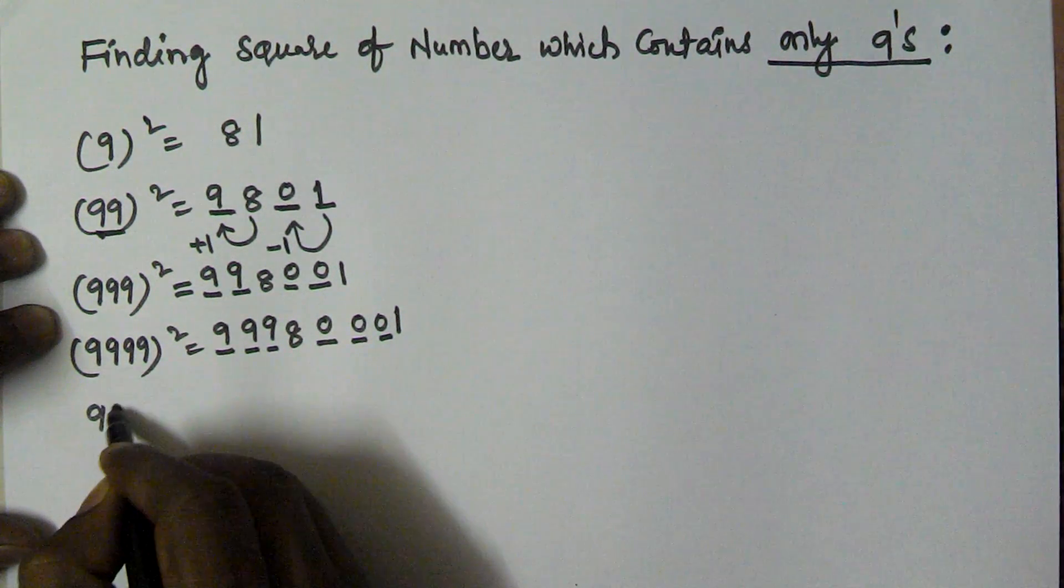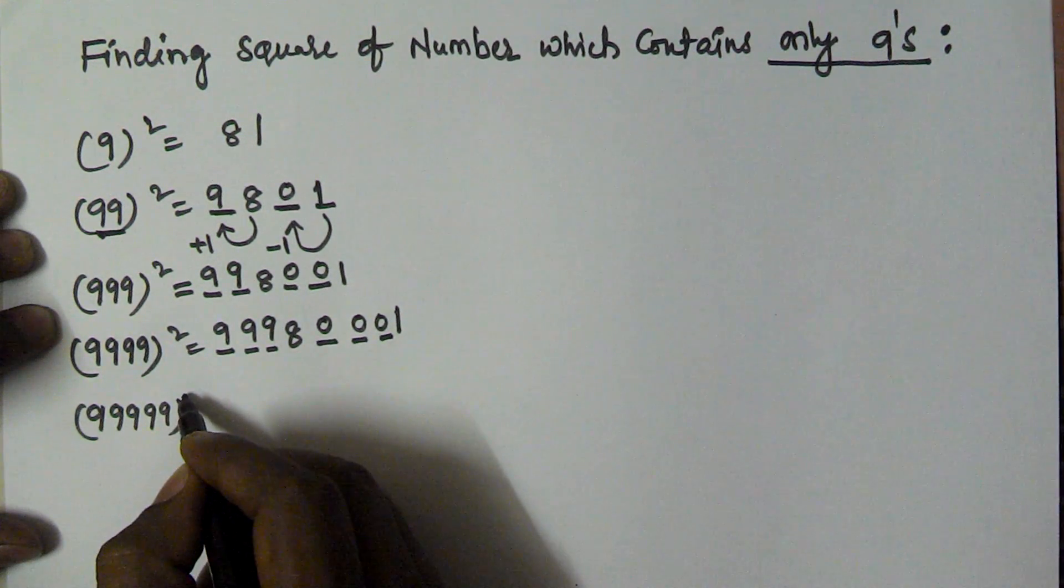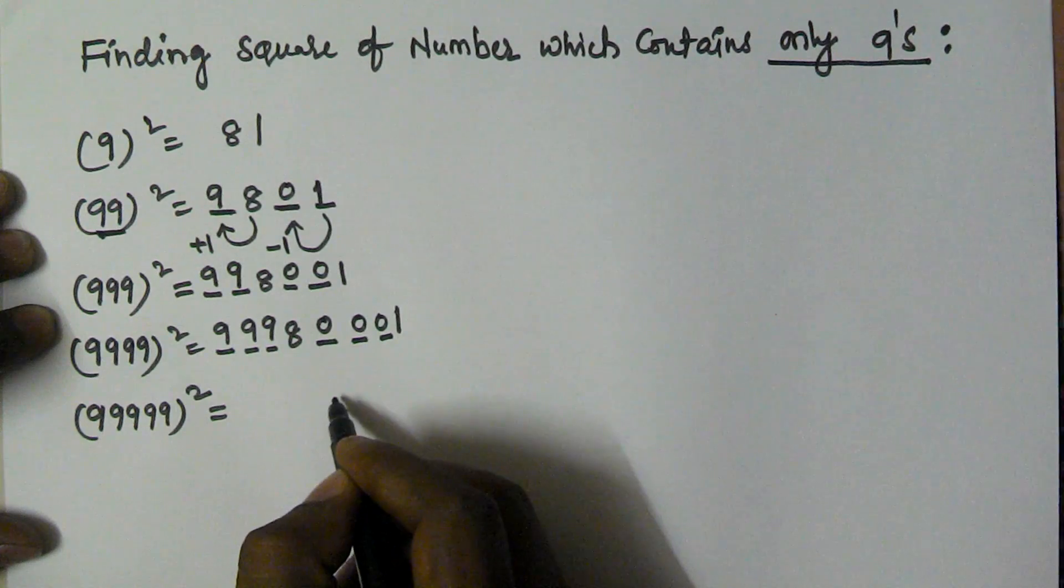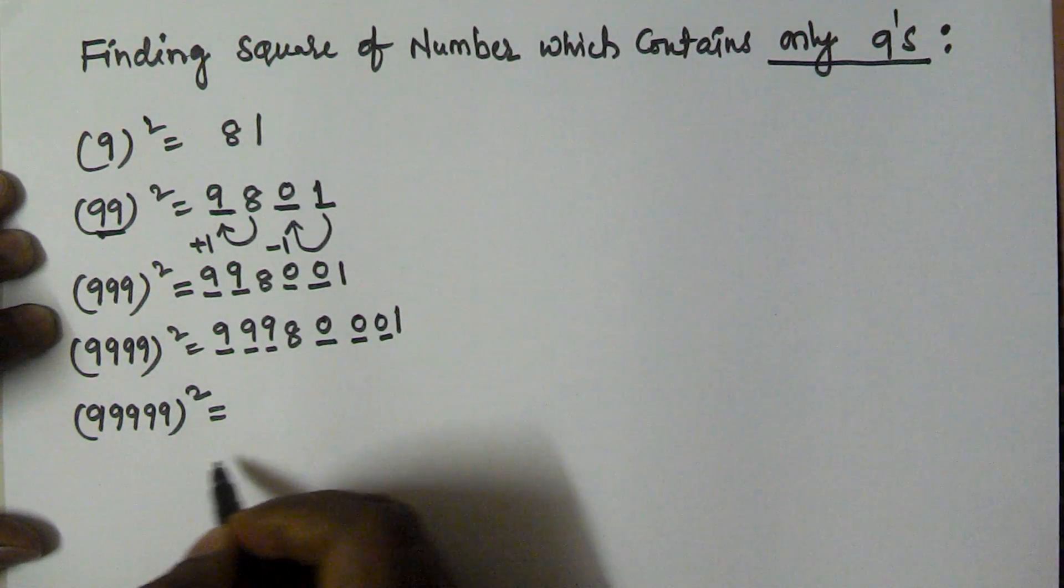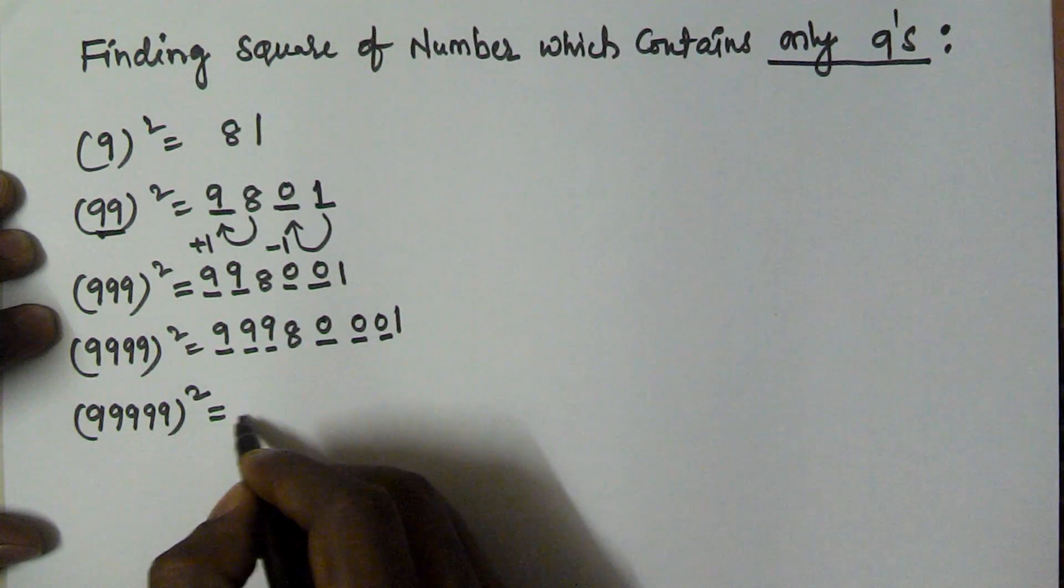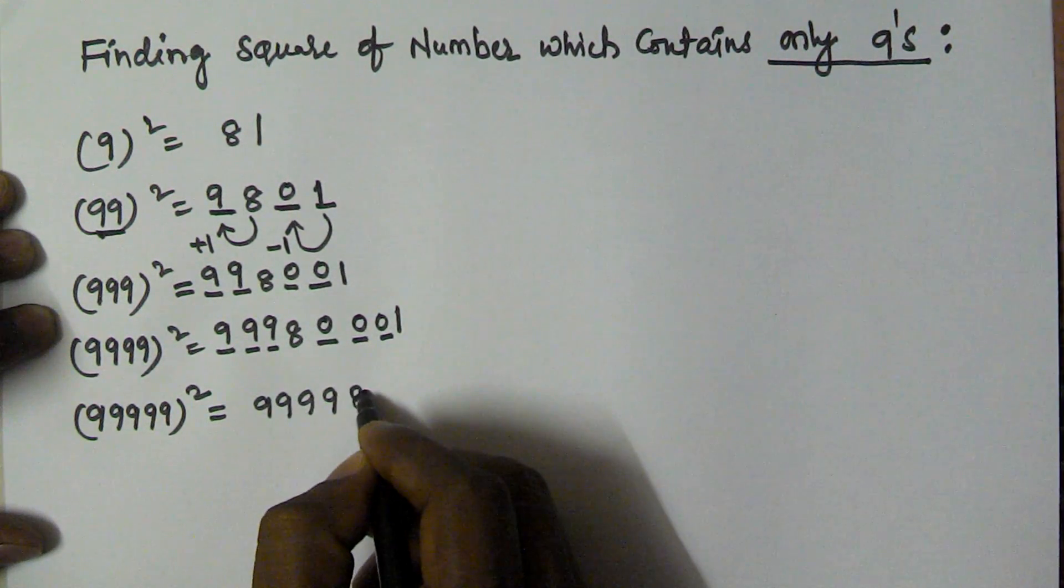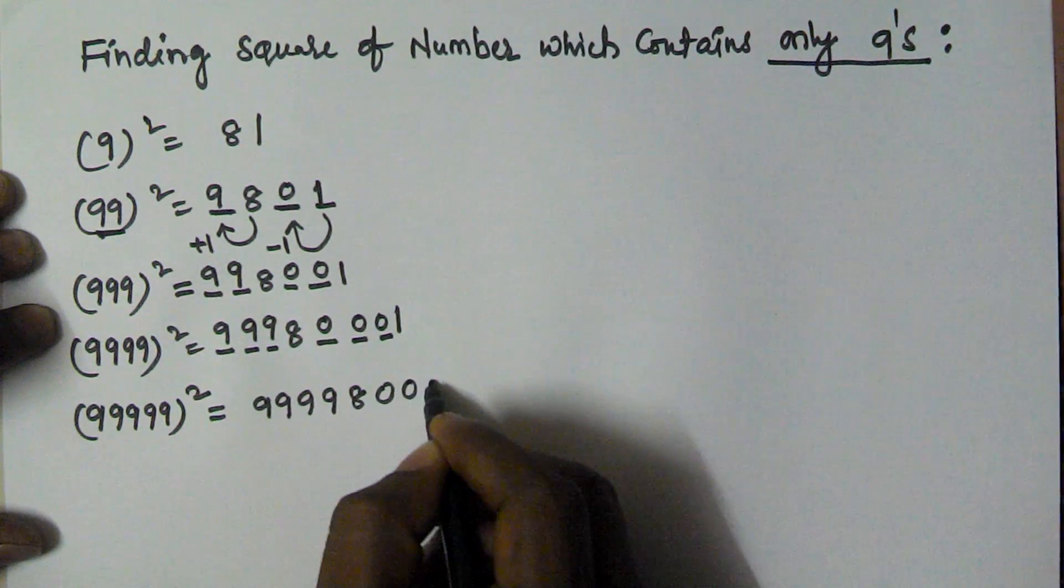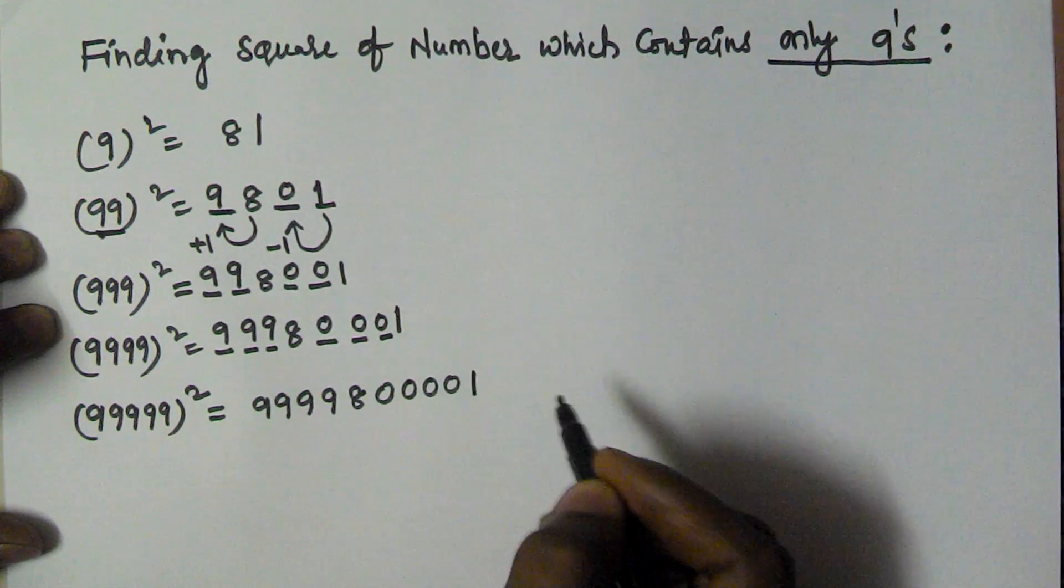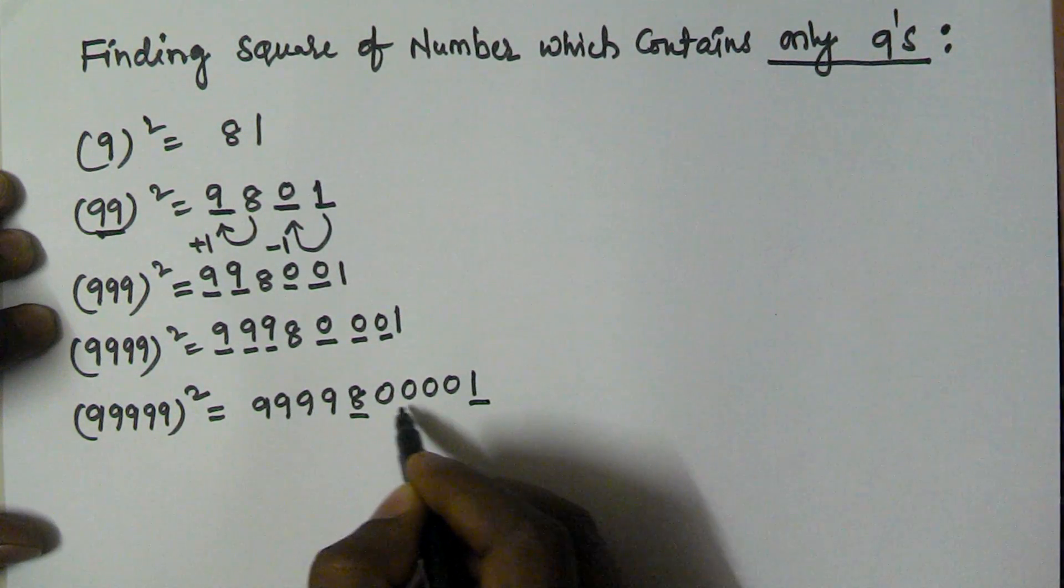In the same manner, 99999 square. We fill it up with plus 1 and minus 1. We get four 9's: 9999, and here we have four 0's: 0000, and then 1. So here we have 81, and before that the pattern of 9's and 0's.